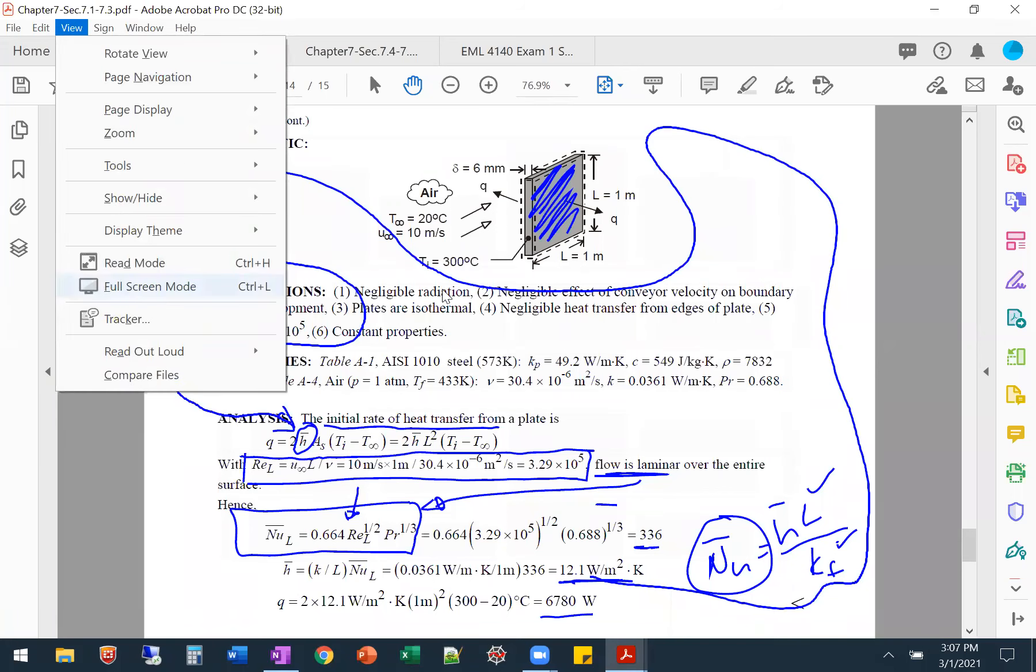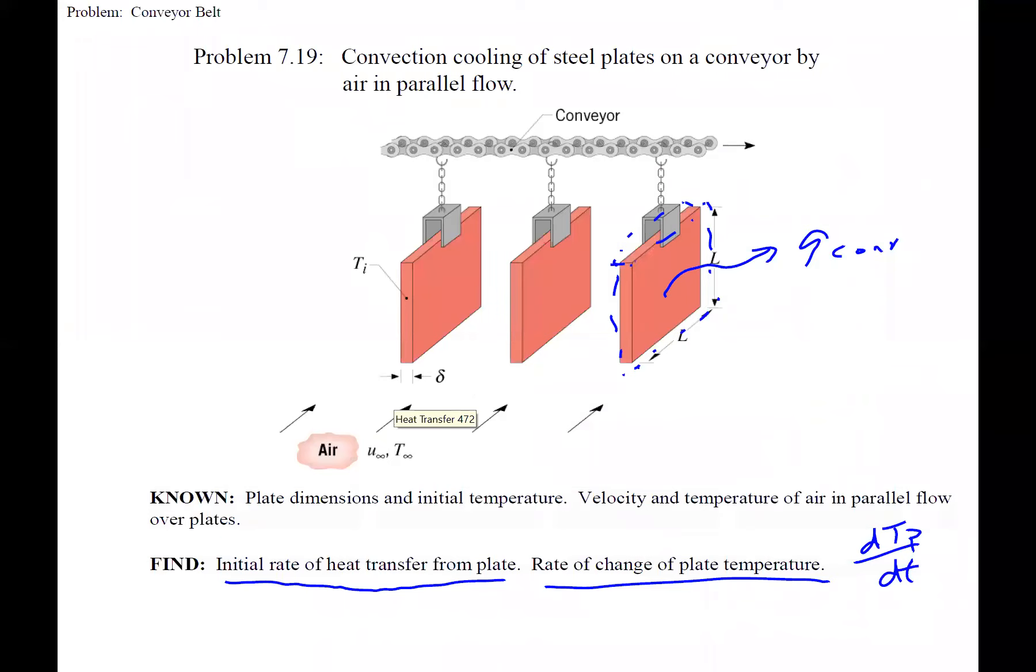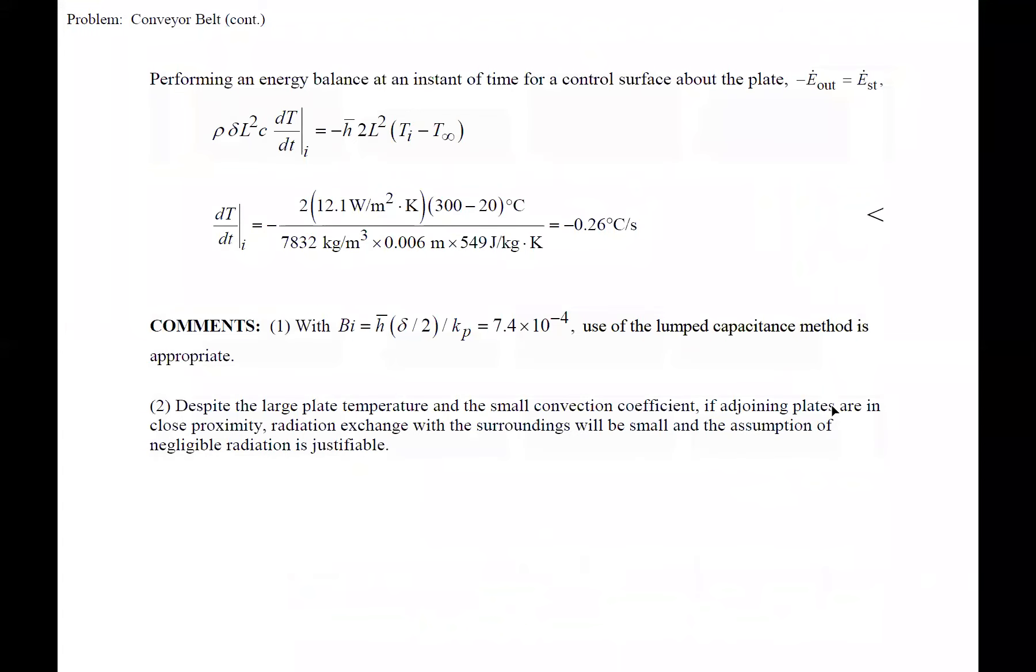Part B, we did the initial rate of heat transfer from the plate. Now we need the rate of change of plate temperature. If we just look at conservation of energy, we have convection leaving, and we have the change in energy stored. There's no generated. There's no energy in. We're just cooling it from convection. We have energy stored that's changing the DT DT.